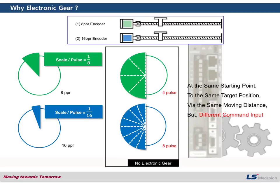In this case, you need two different pulse values for each axis. From the same starting point to the same target position — the same moving distance — they have different command info.